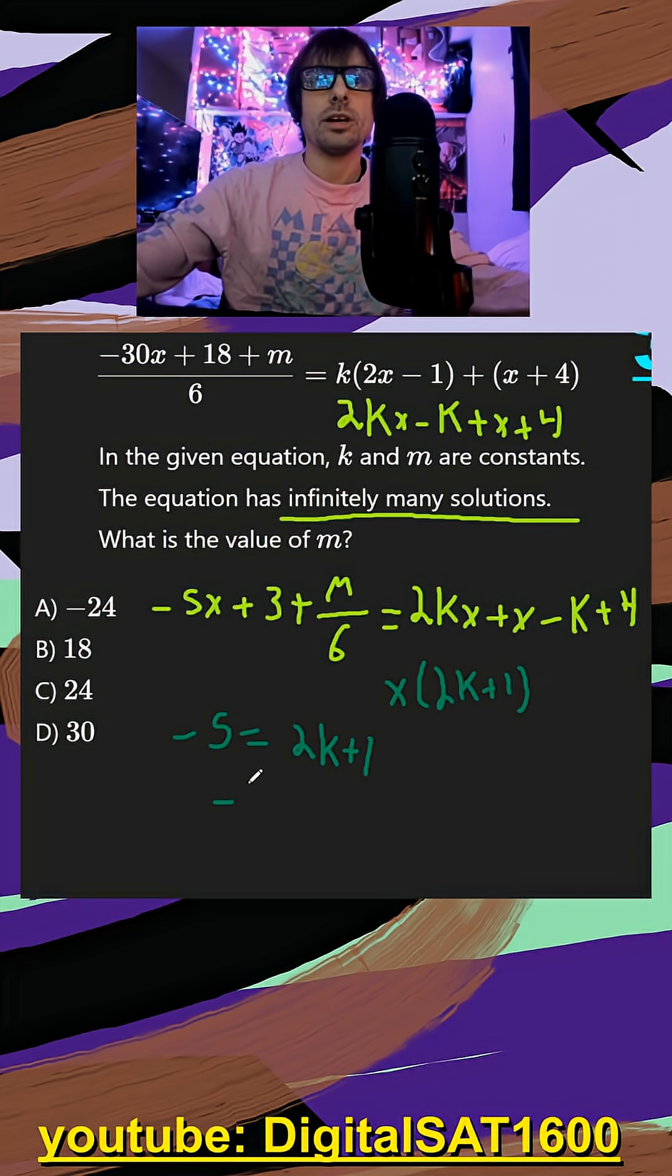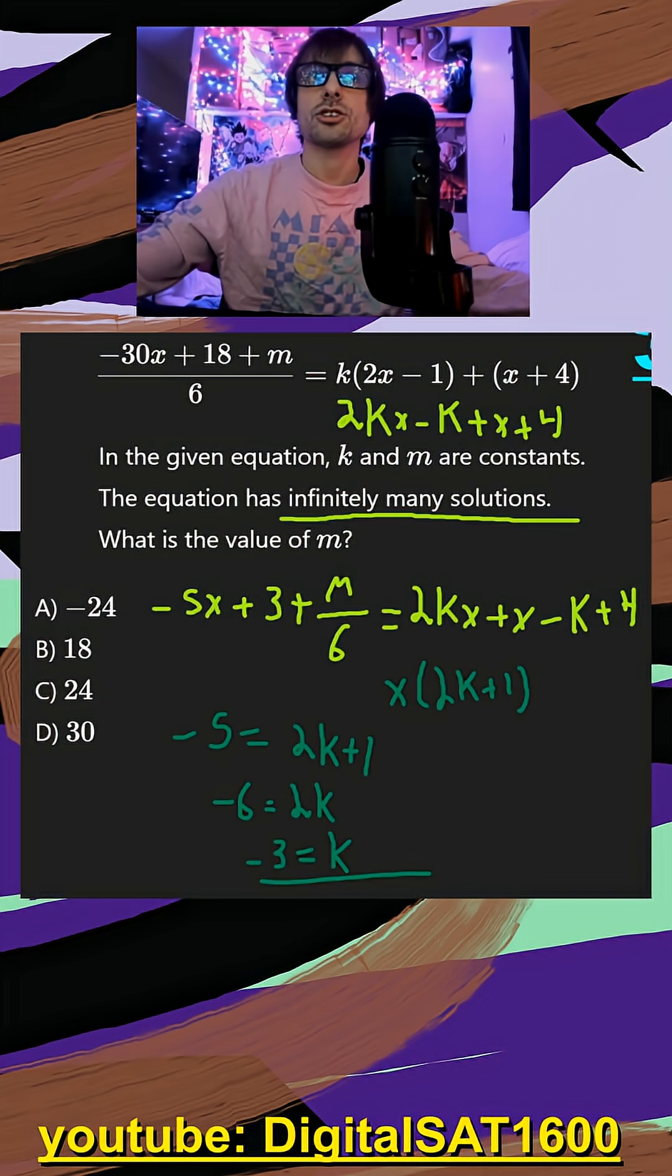So if I subtract the 1, I get negative 6 is equal to 2k, or negative 3 is equal to k. So that's our start.